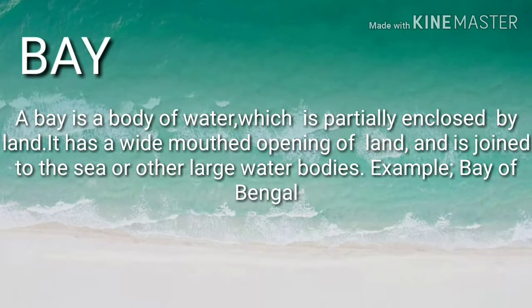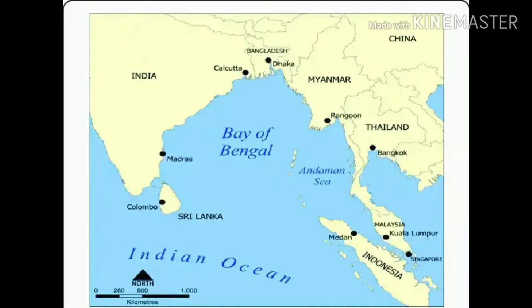Bay: A bay is a body of water which is partially enclosed by land. It has a wide mouth opening and is joined to the sea or other large water bodies. For example, the Bay of Bengal. The map shown here highlights the Bay of Bengal.